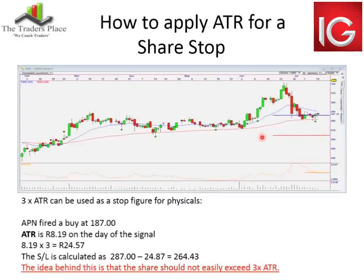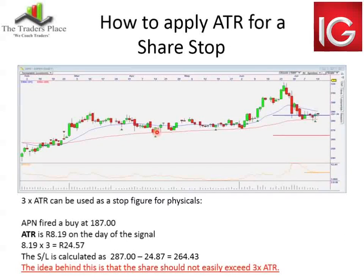The red line is the ATR stop, at 264 rand 43 cents. We can see it is out of the way of both support levels — the shorter-term support level and the longer-term support level. If you trail your ATR once a week and the stock is going in your direction, you can calculate every Saturday morning what the ATR would be and calculate the new stop loss. You can trail it that way.